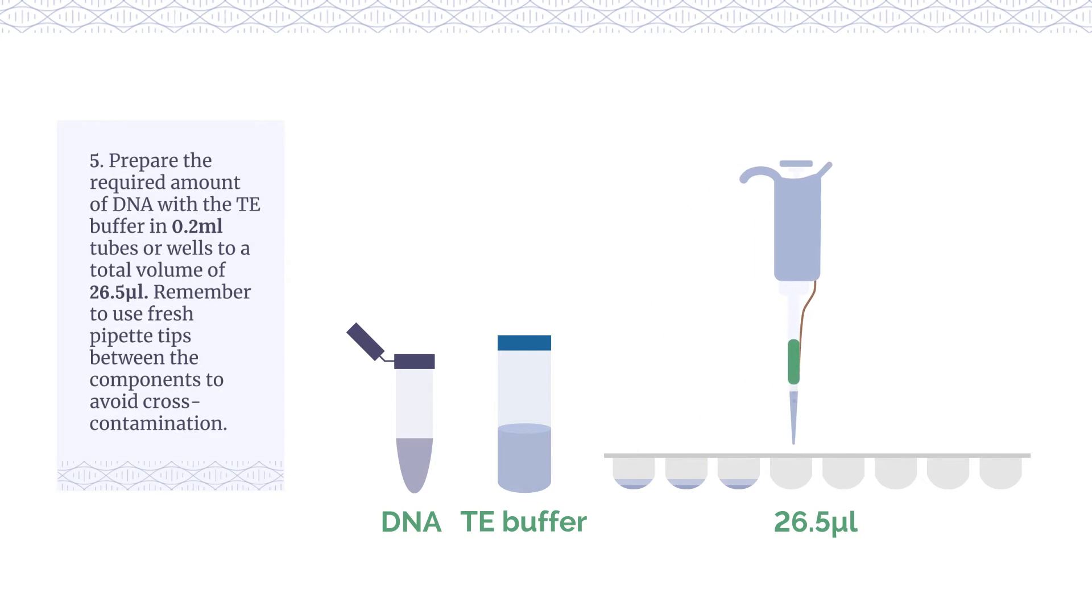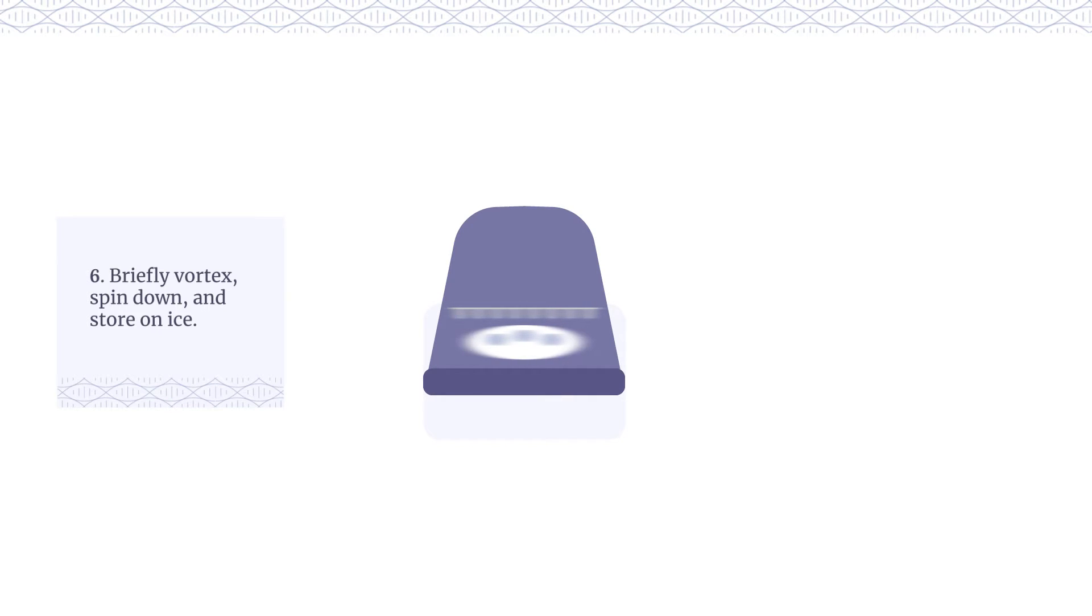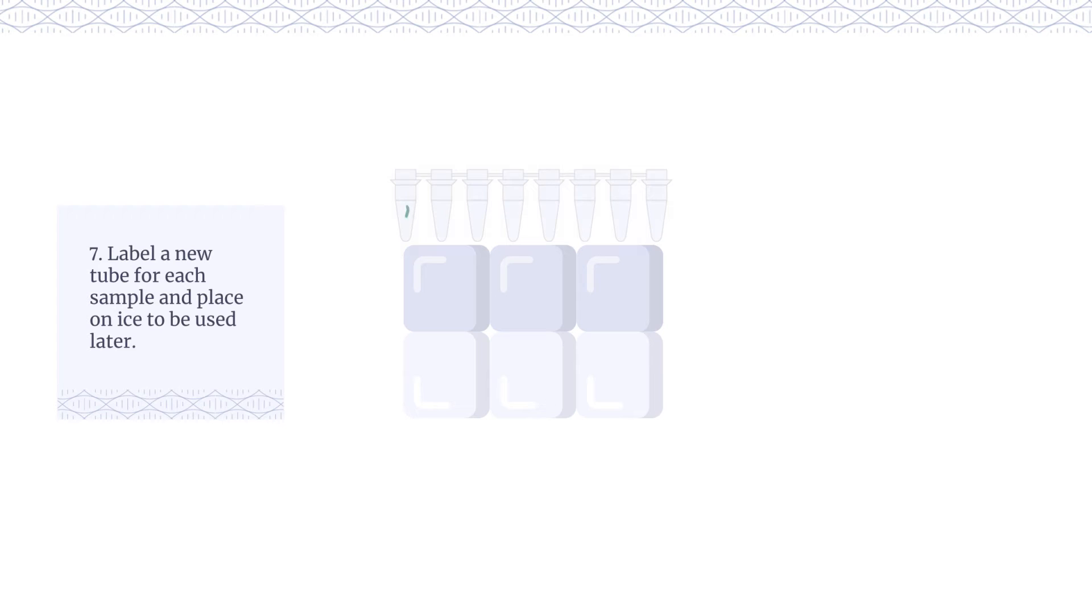Remember to use fresh pipette tips between components to avoid cross-contamination. Briefly vortex, spin down, and store on ice. Label a new tube for each sample and place on ice to be used later.